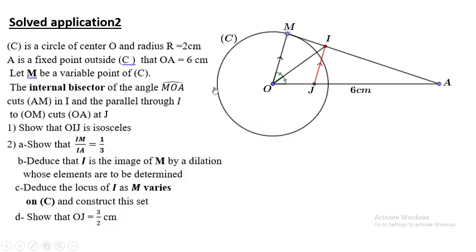The internal bisector of the angle M, O, A cuts AM in a point I. The internal bisector is drawn with the compass, as you learned in grade 9.